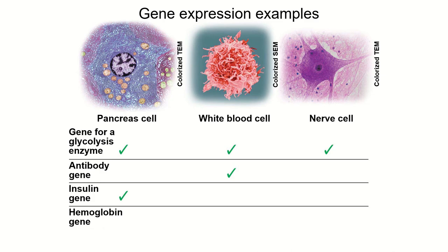This is important because some cells, like a pancreatic cell, are going to have the gene for glycolysis turned on. All cells are going to have the gene for glycolysis turned on because glycolysis is the first step in cellular respiration. But genes for making antibodies only need to be turned on in the white blood cells that make antibodies. The gene for making insulin only needs to get turned on in the parts of the pancreas that make insulin. Different cells in different parts of an organism do different things.